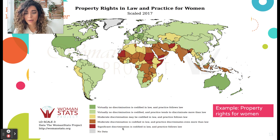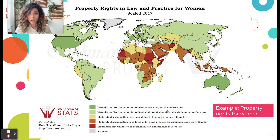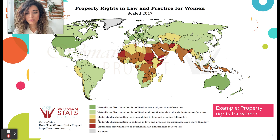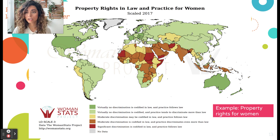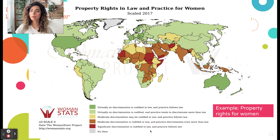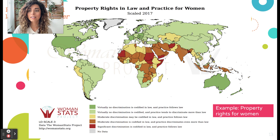Here is a global snapshot of property rights in law and practice for women. Green indicates less discrimination — both codified in law and followed in practice. Some places have non-discriminatory laws but discriminatory practices in reality. In red, significant discrimination is codified into law, meaning women do not have the same legal rights, and practice aligns with that discrimination. You can pause the video to take a closer look at this map.